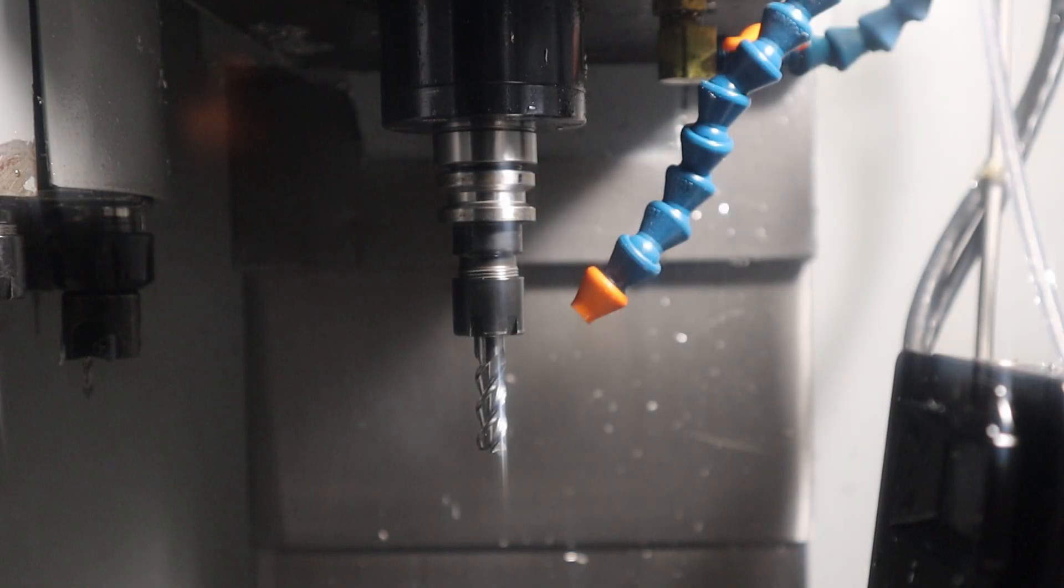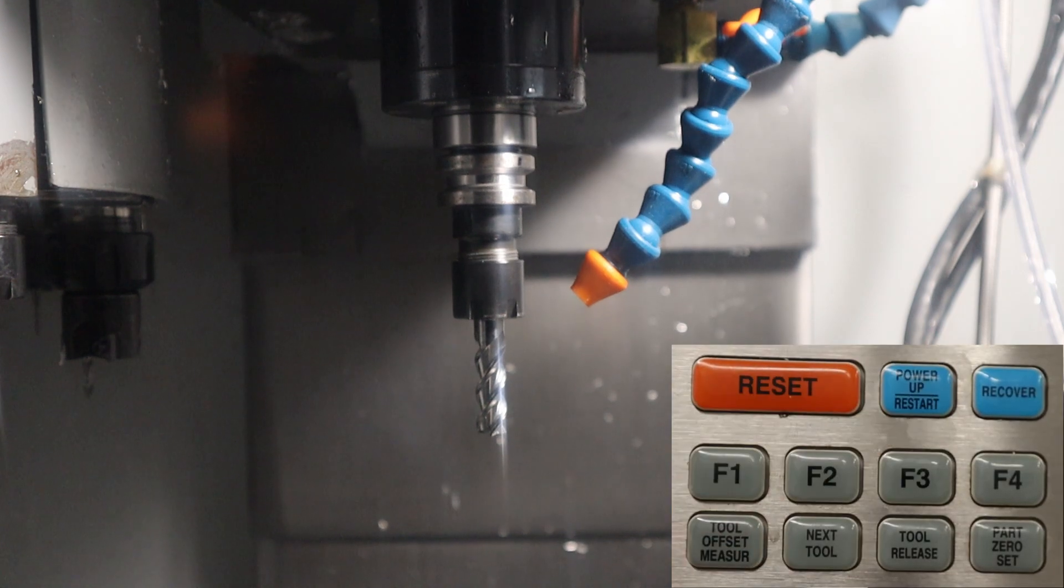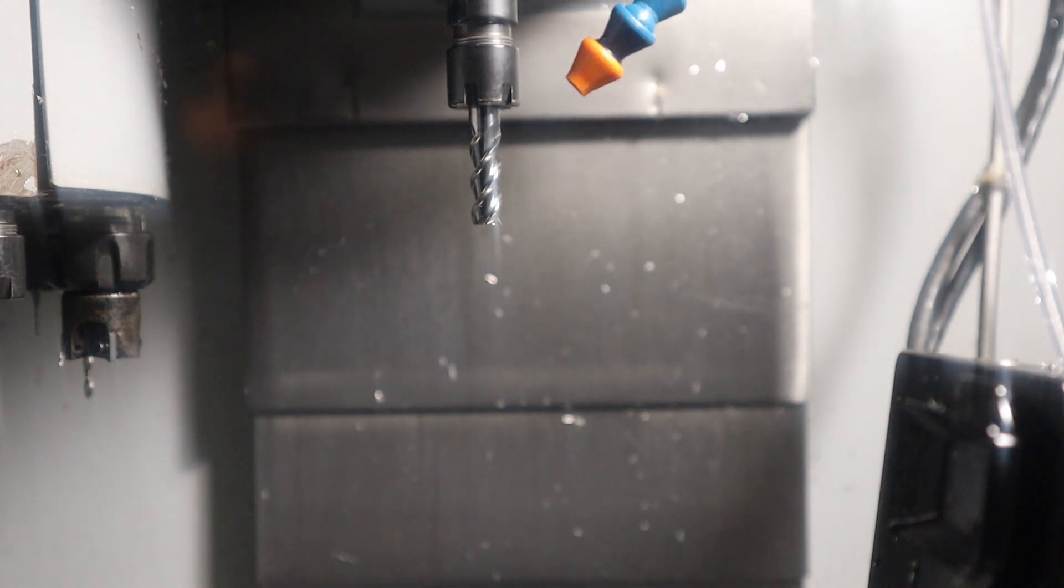Let's get started and see how accurate the machine is and precise. The tool is currently in the last position it was in when I turned the machine off. And what I'm going to do now is press the power up, restart, or reset, and you're going to see it move up to the home switch. And then it's going to move down a little bit. So watch carefully.